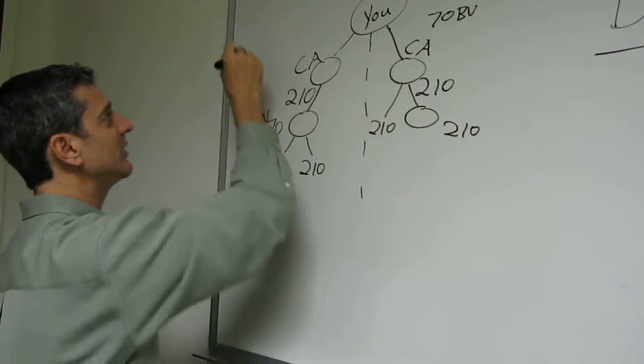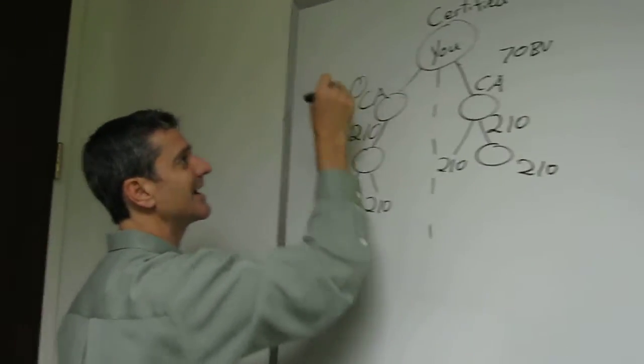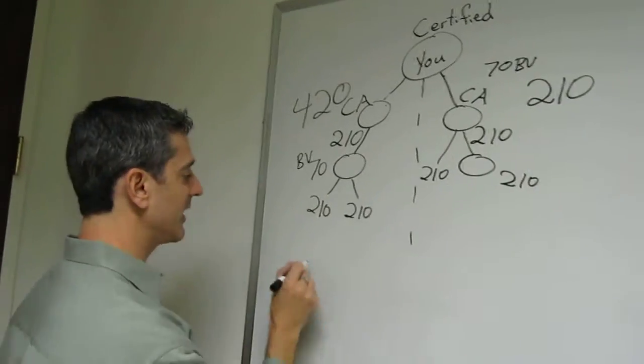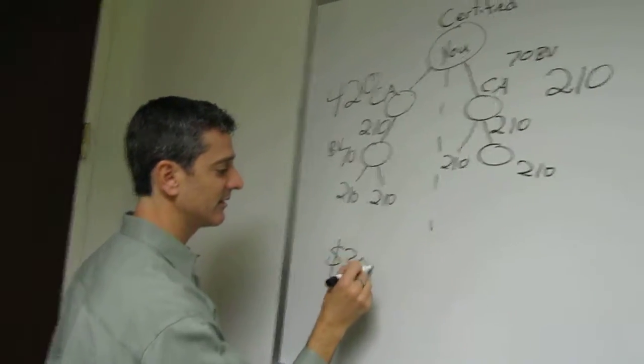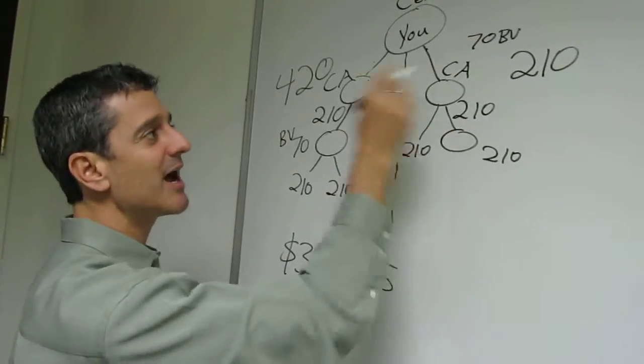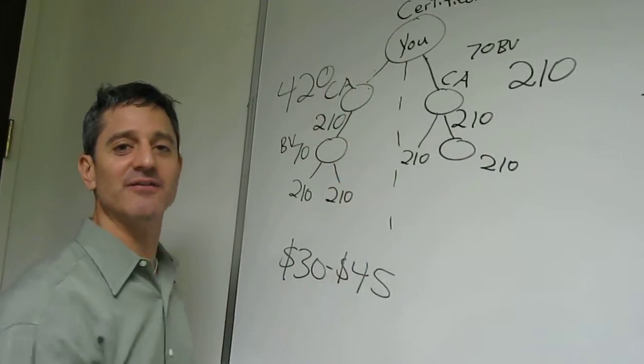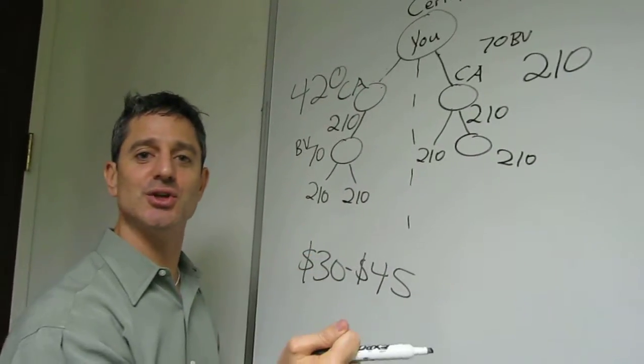Now, what happens there? Well, if you need 420 points on one side and 210 points on another side to cycle and get paid between $30 and $45, look how much faster you're going to cycle if you're bringing in certified affiliates on the first two.